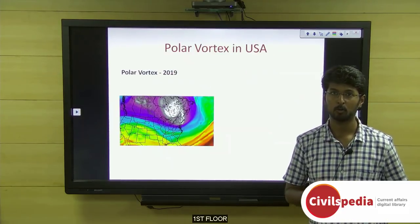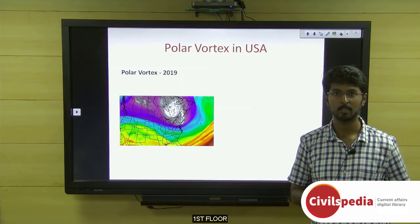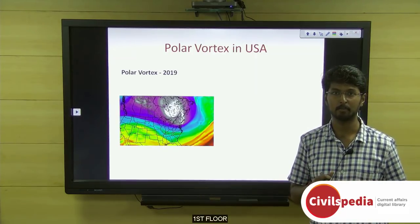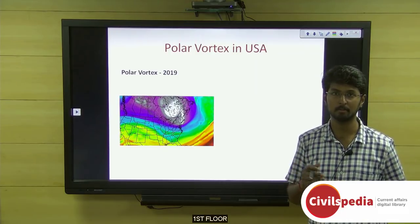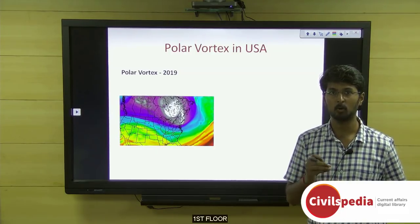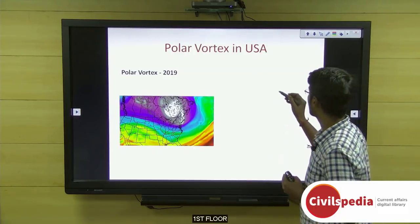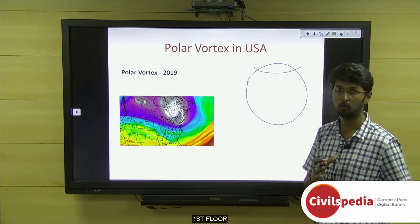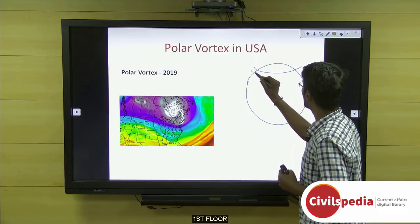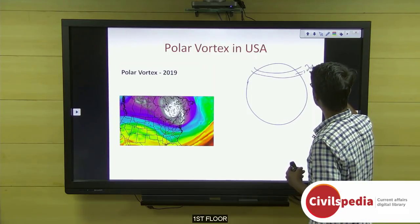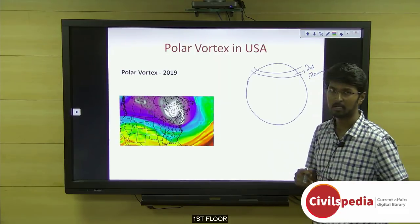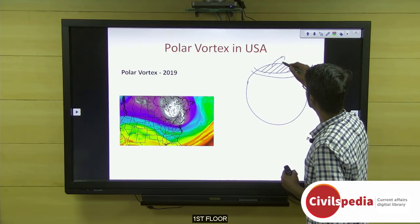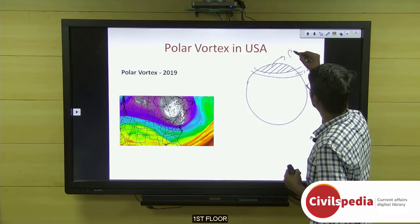Let's move on to the polar vortex in the USA, where freezing temperatures have occurred in the midwest and eastern parts. The polar vortex is a dense band of low pressure area in the polar region with a continuous jet stream. The jet stream occurs between hot and cold air, and this dense low-pressure area is called the polar vortex.